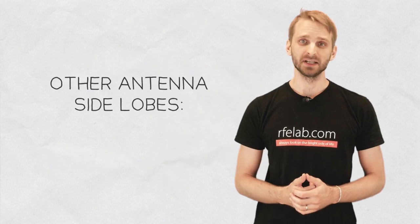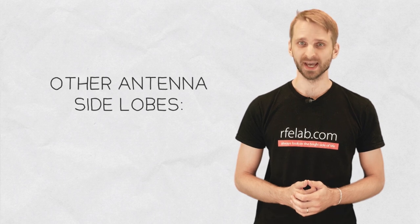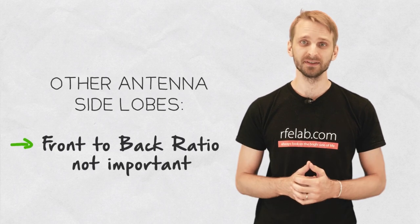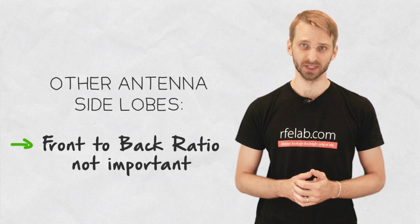The other side lobes that antennas used in the WISP industry usually have completely diminish the benefit that high front-to-back ratio supposedly brings.